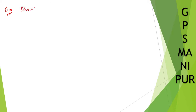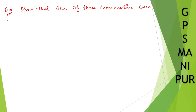Question number 10, exercise 1.1. The question says: show that one of three consecutive odd integers is a multiple of 3.